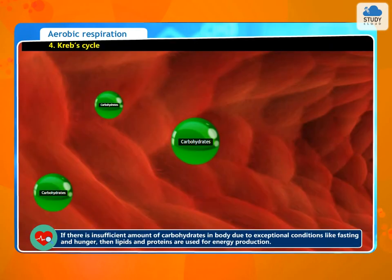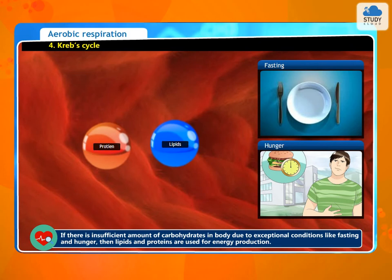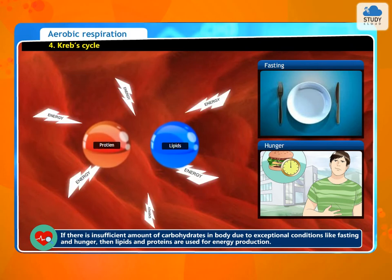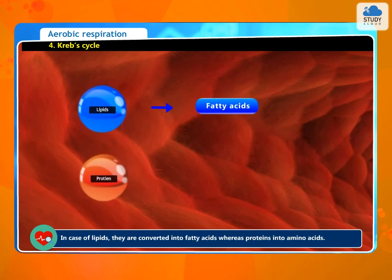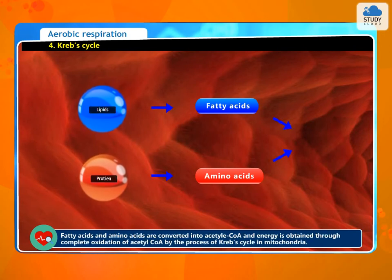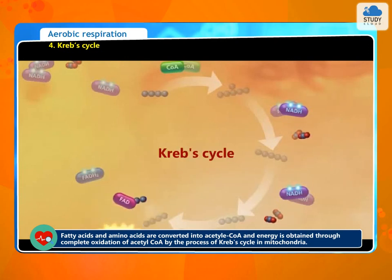If there is an insufficient amount of carbohydrates in the body due to exceptional conditions like fasting and hunger, then lipids and proteins are used for energy production. In the case of lipids, they are converted into fatty acids, whereas proteins are converted into amino acids. Fatty acids and amino acids are converted into acetyl CoA, and energy is obtained through complete oxidation of acetyl CoA by the process of the Krebs cycle in the mitochondria.